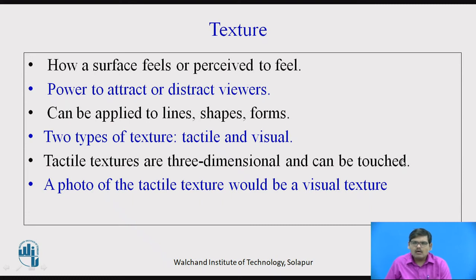Then we have texture — how a person feels a texture, or how you are made to feel when you touch a particular surface. Texture has the power to attract or distract the viewers. If the texture is appealing, you are attracted towards it. It can be applied to lines, shapes and forms. There are two types of textures: tactile texture and visual texture. Tactile textures are 3D, and a visual texture is a photo of the tactile structure.